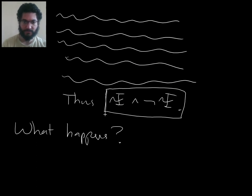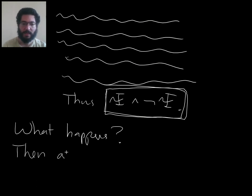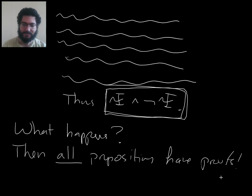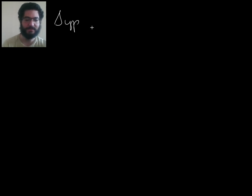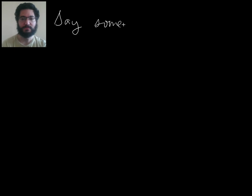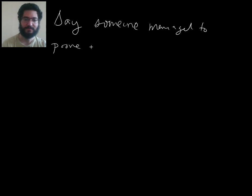Suppose someone proved psi and not psi. Then I claim all propositions have proofs. With the rules we have so far, if someone actually managed to prove a contradiction, then any grammatical proposition can be proven using proof by contradiction. So this is not a proof, but part of the hypothetical meta-situation: say someone managed to prove psi and not psi.